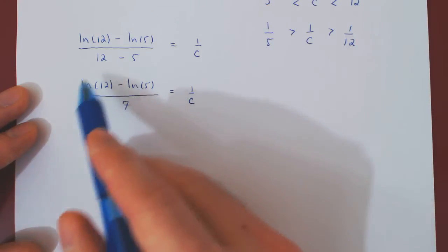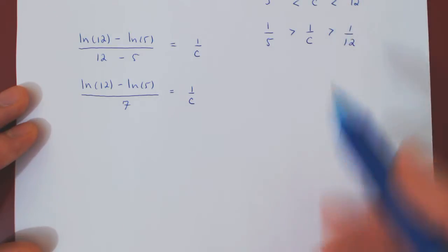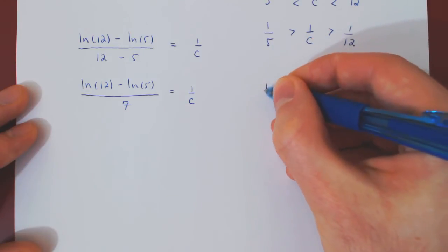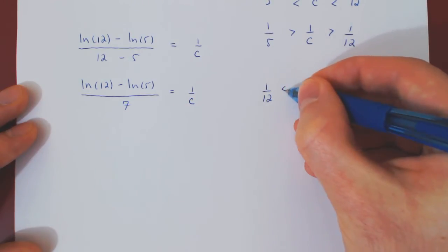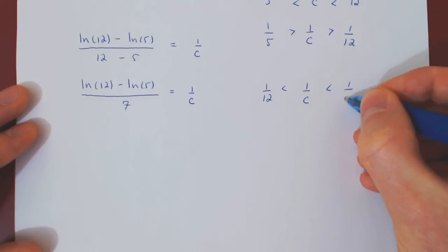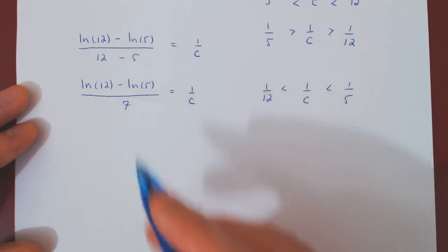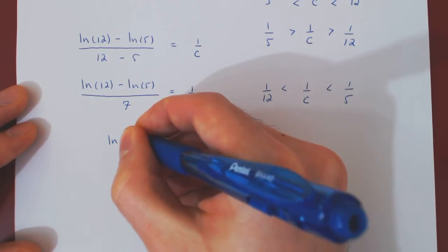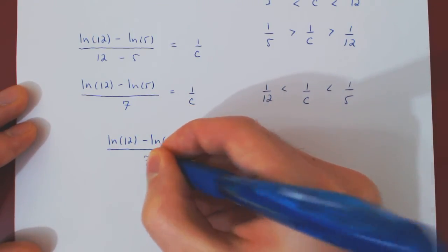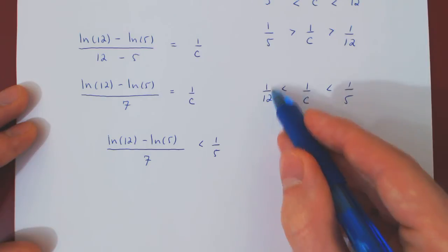And I will, of course, rewrite this in a more natural direction, which will be that 1 over 12 is less than 1 over c, which in turn is less than 1 over 5. And now I make the substitution, replacing 1 over c by this expression. So what I have now is that the ln of 12 minus the ln of 5 over 7 is less than 1 over 5, but larger than 1 over 12.